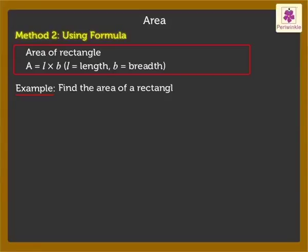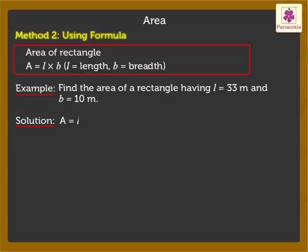Now let's solve one more example. Find the area of a rectangle having length 33 meters and breadth 10 meters. Area = length × breadth = 33 × 10 = 330 square meters.